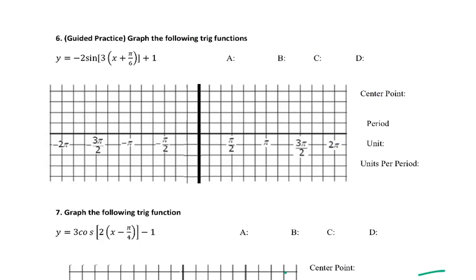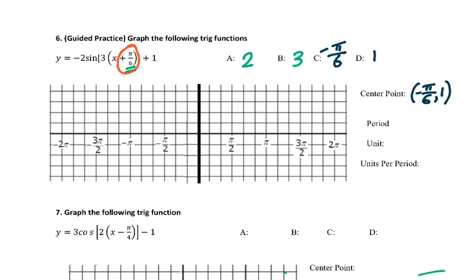Graph the following trig functions. First of all, figure out A, B, C, D. A will be two, B is three, C is opposite to this number because the insider is a liar — negative pi over six. Then D is one. Center point will be negative pi over six, one. Remember, insider is a liar.